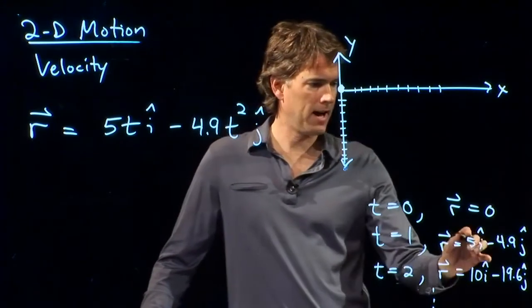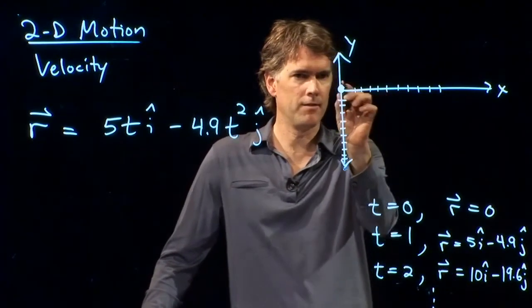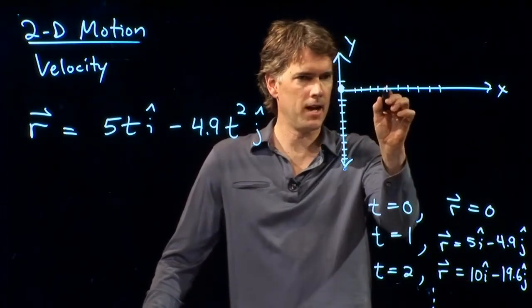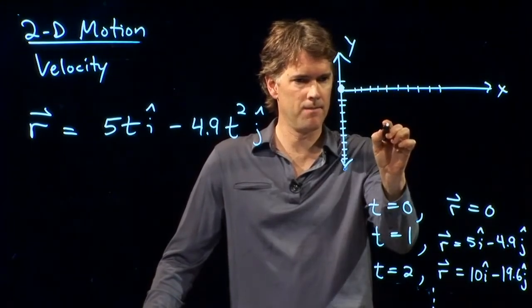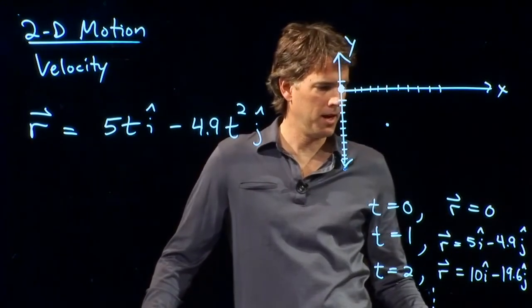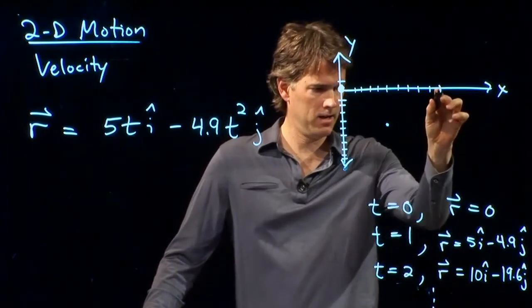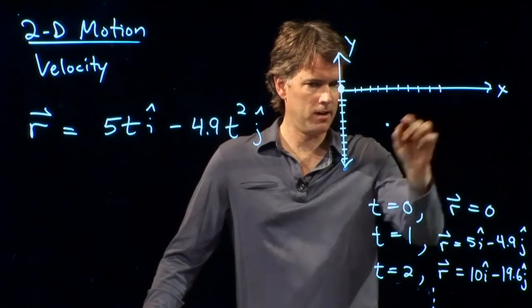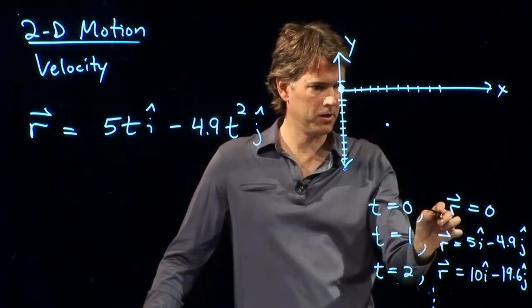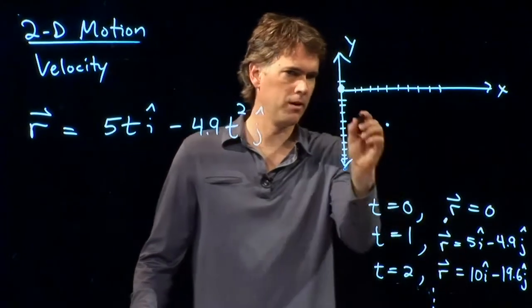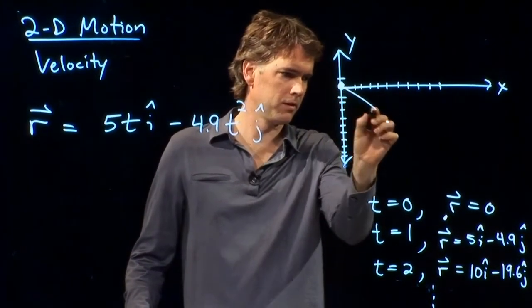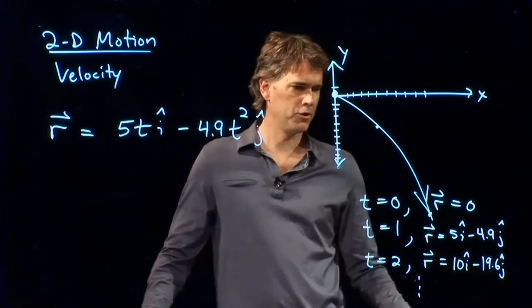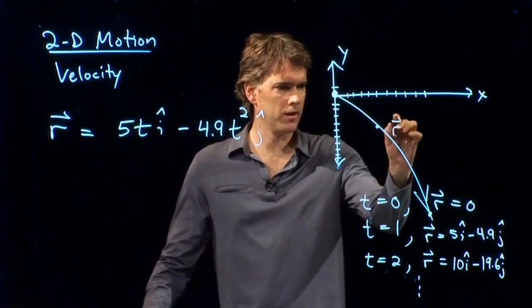And at 5 i-hat, we move over 5. And we're going to go down 4.9 j-hat. So, down to there. The next point, we are at 10 i-hat minus 19.6 j-hat, which is way down here off the scale. So, it's going to be down there somewhere. And so, look what happens. This thing is going to go like this. Okay. That's the trajectory, r, as a function of time.